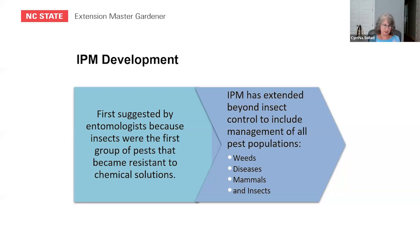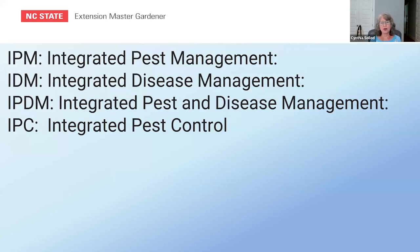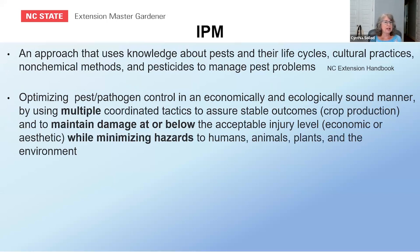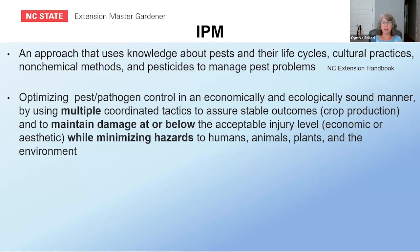IPM goes by many names: integrated pest management, integrated disease management, integrated pest control — they all mean the same thing. It's a knowledge-based approach about pests, their life cycles, and host life cycles, using cultural practices and non-chemical methods as well as pesticides to manage pest problems. Another definition: you're trying to optimize what you're doing in both an economic and ecological manner, using multiple coordinated tactics to maintain damage at or below an acceptable injury level while minimizing hazards to humans, animals, plants, and the environment.